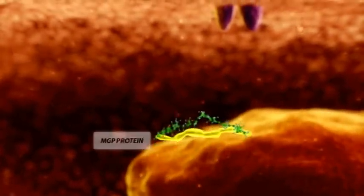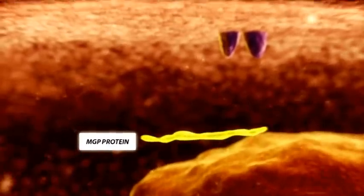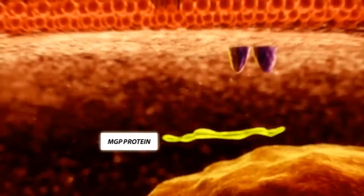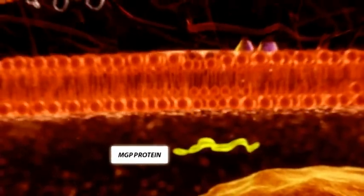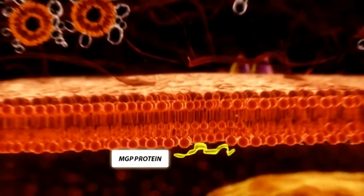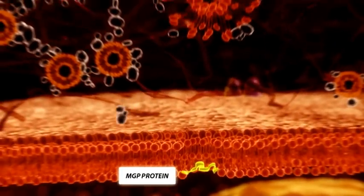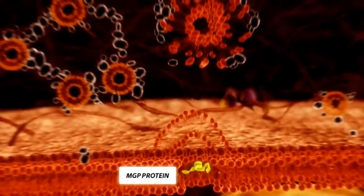When calcifications are present, MGP is present in the inactive, unable to prevent the crystal growth mode. Supplementation with natural MenaQ7 will reach the vessel wall and the vascular smooth muscle cells. In these cells, the newly formed MGP is activated.